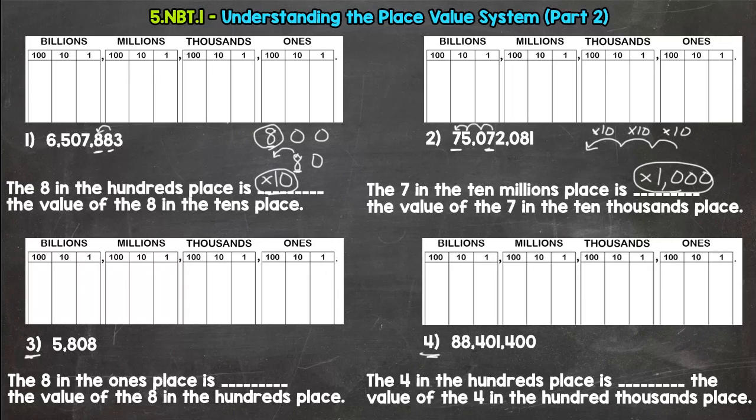3 spots, 3 places to the left, which is 1,000 times greater. Now in number 3 and 4, the wording of the sentence is a lot different. Not a lot different. It's just opposite.